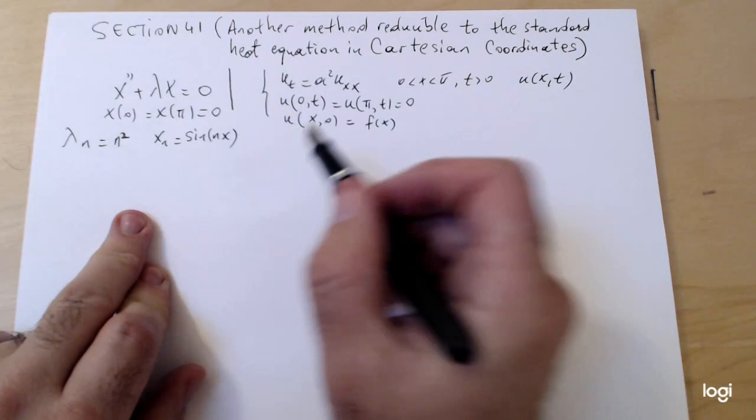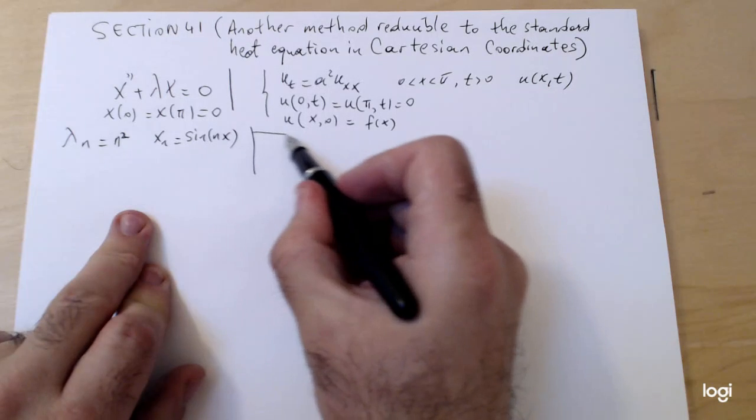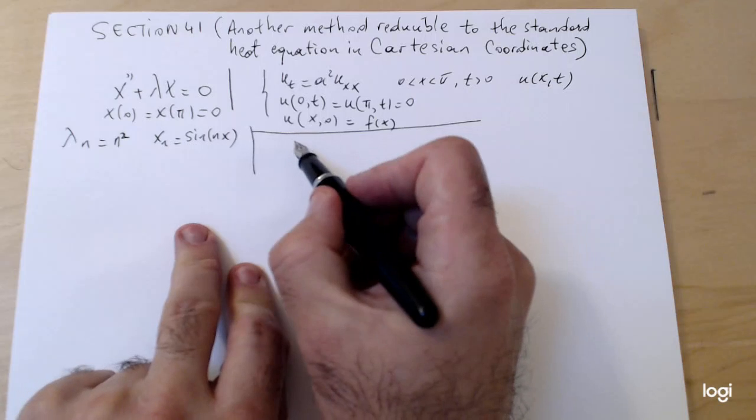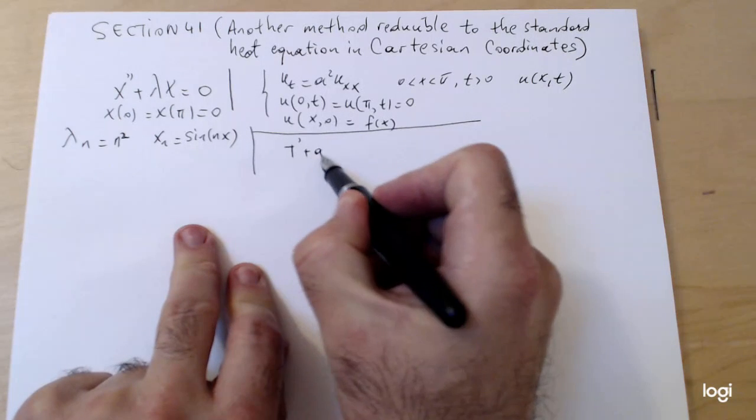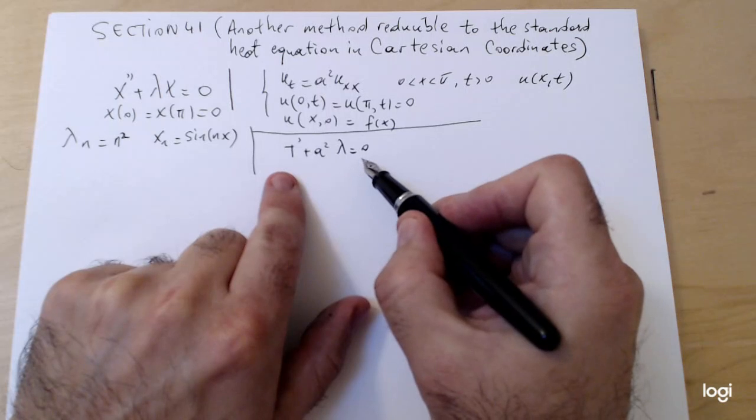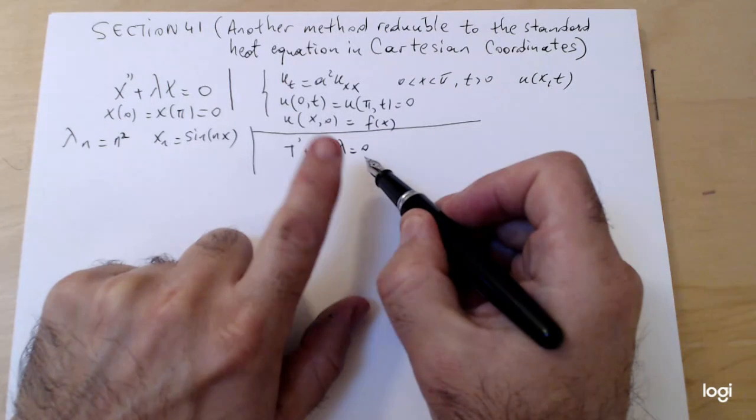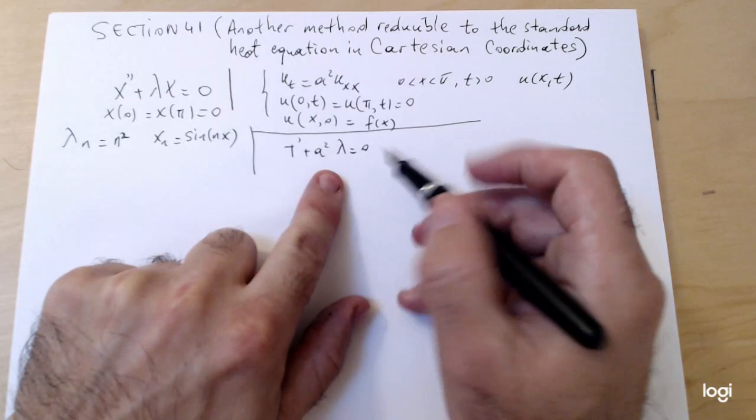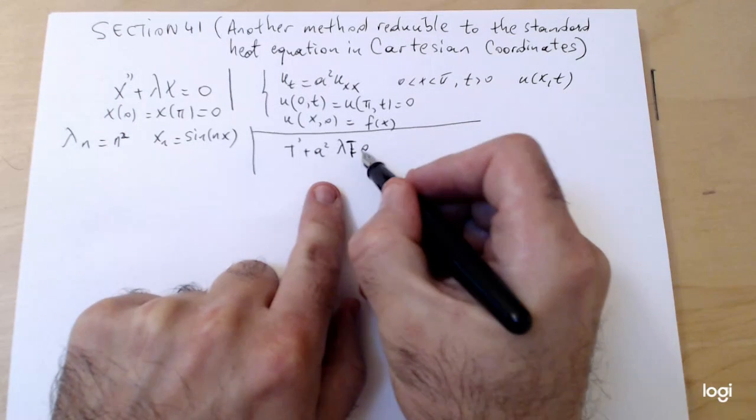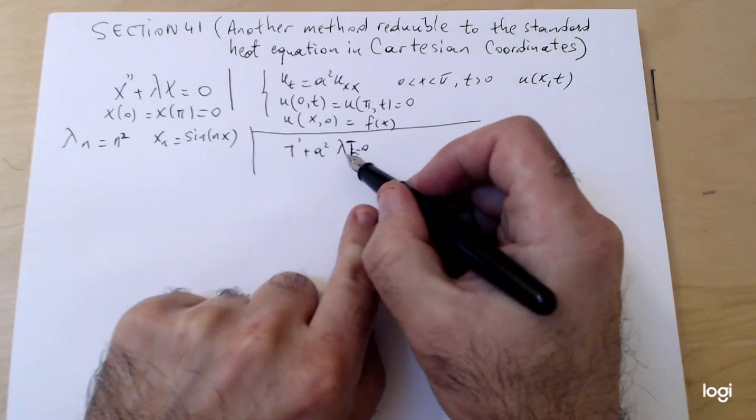The eigenfunctions X_n will be in this case sin(nx). Then the initial value problem in the temperature for this boundary value problem will be T' plus a² λ equals zero.